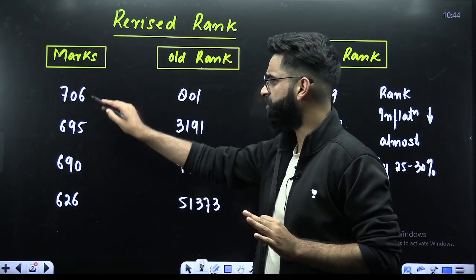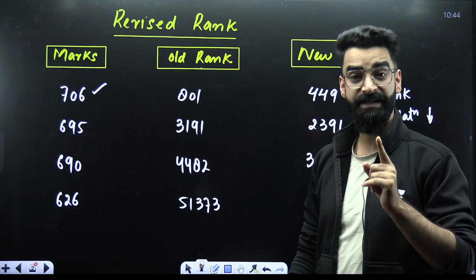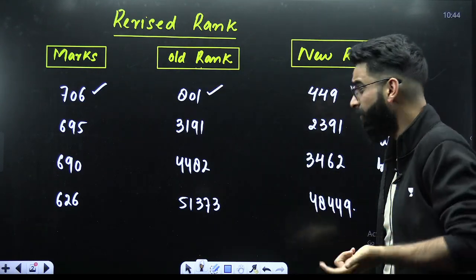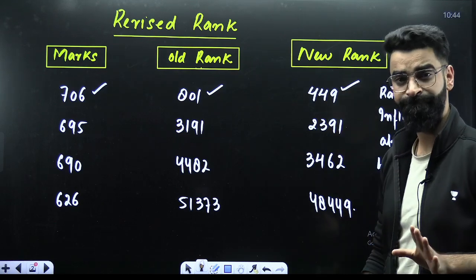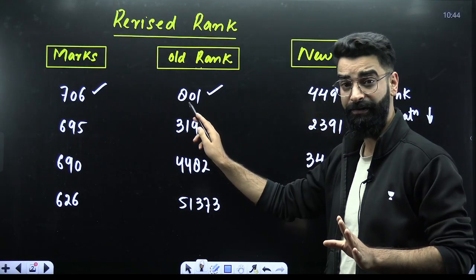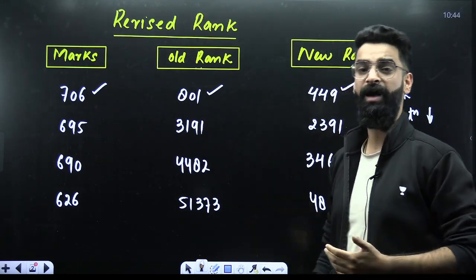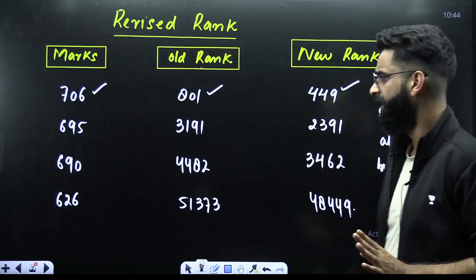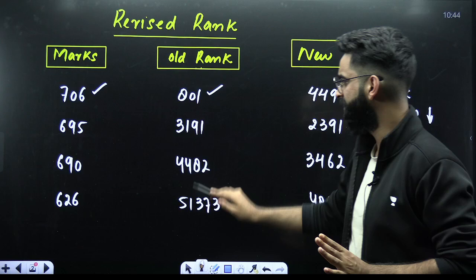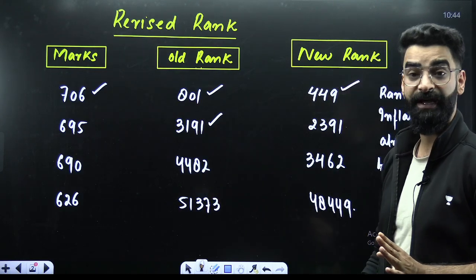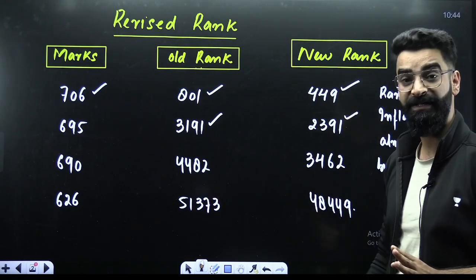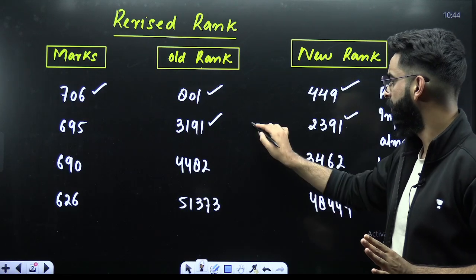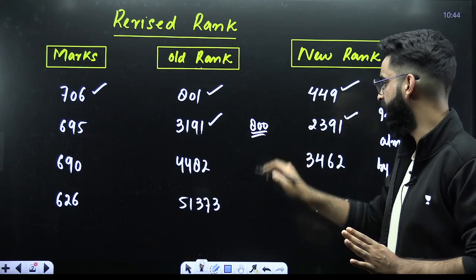Let me first of all tell you that student who was getting 706 marks - his old rank was 801 and his new rank is 449. His old rank was 801 and his new rank now after the publication of the new result is 449. So there is significant drop in the rank. Similarly at 695, the rank was earlier 3191. Now the same student is getting 2391 rank. So there's a difference of 800 over here.